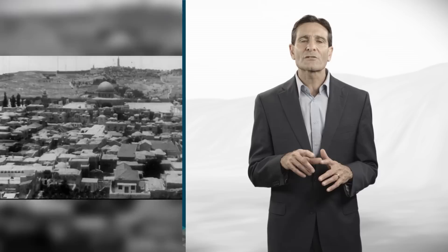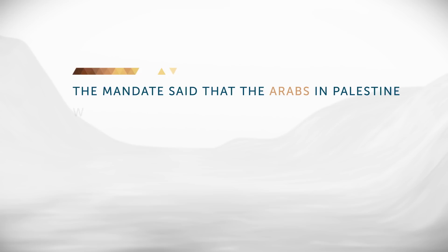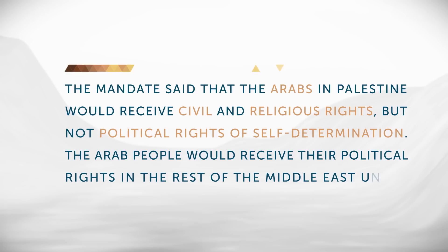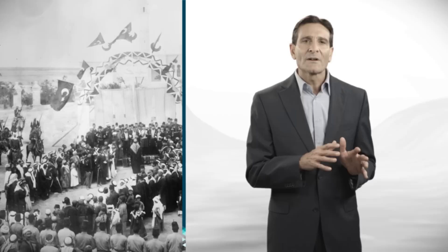The mandate made the Jewish people a recipient of self-determination in Israel-Palestine. The Arabs in Palestine would receive civil and religious rights, but not the political rights of self-determination. The Arab people would receive their political rights in the rest of the Middle East under the mandates for Syria and Iraq. In San Remo, the Allied powers created mandates that allowed tens of millions of Arabs to gain their freedom from Turkish rule.